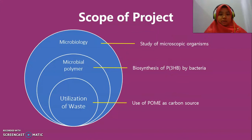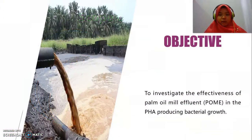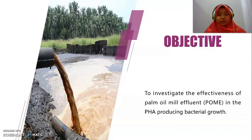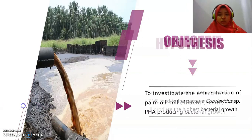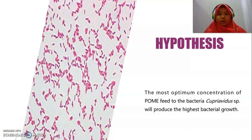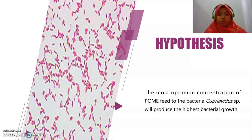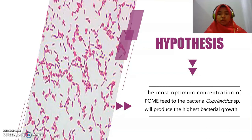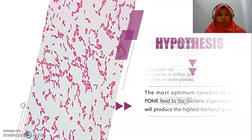This is the scope of my project. The objective is to investigate the effectiveness of Palm Oil Mill Effluent (POME) in the PHA-producing bacterial growth. My hypothesis is that the most optimum concentration of POME fed to the bacteria Cupriavidus species will produce the highest bacterial growth.